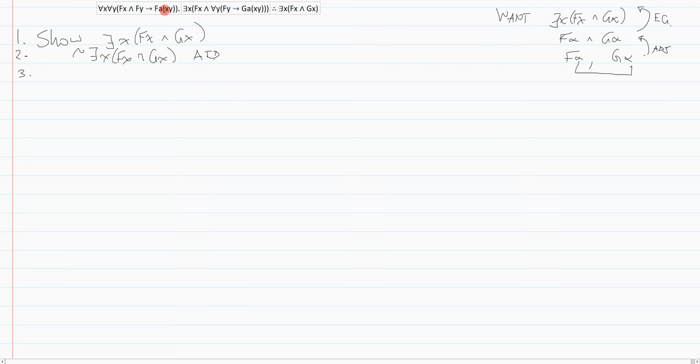This is a double UI so I'm going to UI only when I have guidance to match. This is an existential right off the bat so I know my automatic move is to EI to something brand new. That means I change all instances of x to i. That's fy arrow gai y.